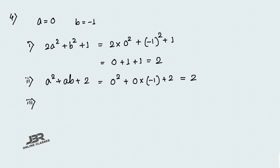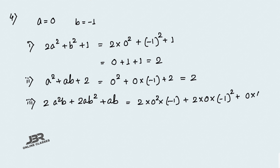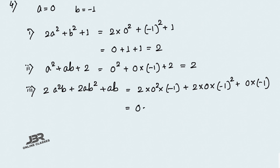The last expression: 2a²b plus 2ab² plus ab. So 2 into 0² into (minus 1) plus 2 into 0 into (minus 1)² plus 0 into (minus 1). Since 0 multiplied by anything equals 0, each term is 0. So the answer is 0.